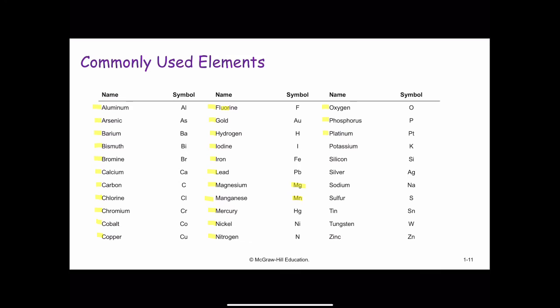Phosphorus, platinum, potassium, silicon, silver, sodium, sulfur, tin, tungsten, and zinc. Again, a good idea to familiarize yourself with all of these commonly used elements' names as well as their atomic symbols.